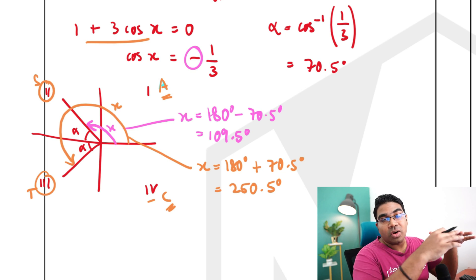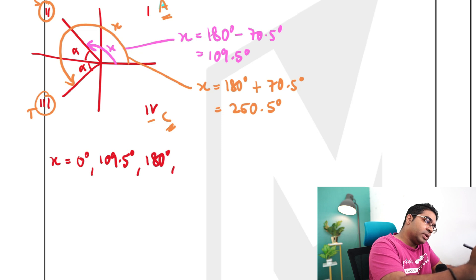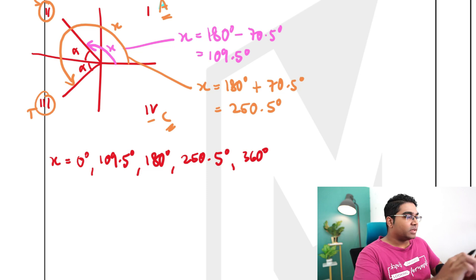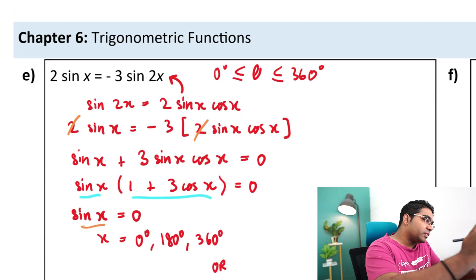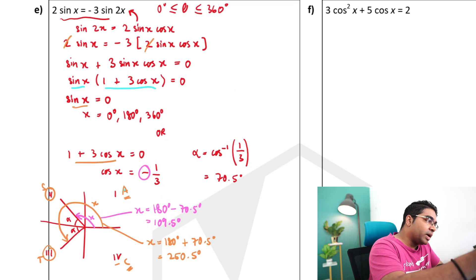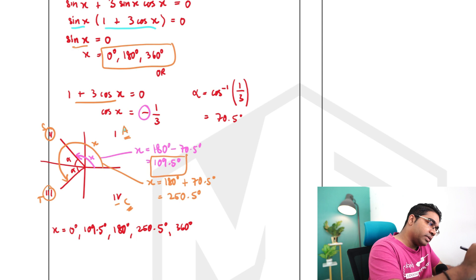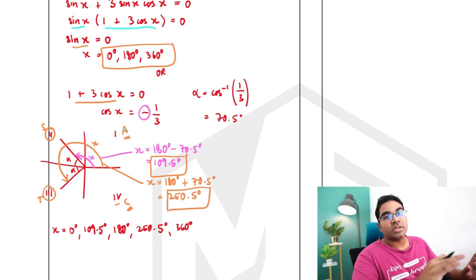And so what is the value of x? So x has five possible solutions here. x is either equals to 0, 109.5 degrees, 180 degrees, 250.5 degrees, or 360 degrees. All these values of x will satisfy our original equation, 2 sine of x is equals to negative 3 sine 2x. Essentially, what we've done is, we've combined the first values here with the values that we got here. And these are all the solutions of x.